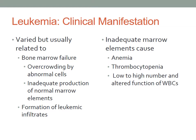Bone marrow failure also results from overcrowding with abnormal cells and inadequate production of red blood cells and platelets. The patient often presents with signs of anemia such as fatigue, pallor, weakness, and shortness of breath, as well as signs of thrombocytopenia such as petechiae, nosebleed, and easy bruising from the decreased number of platelets. If leukemia is left untreated, it can be fatal, resulting in death mainly from infections.